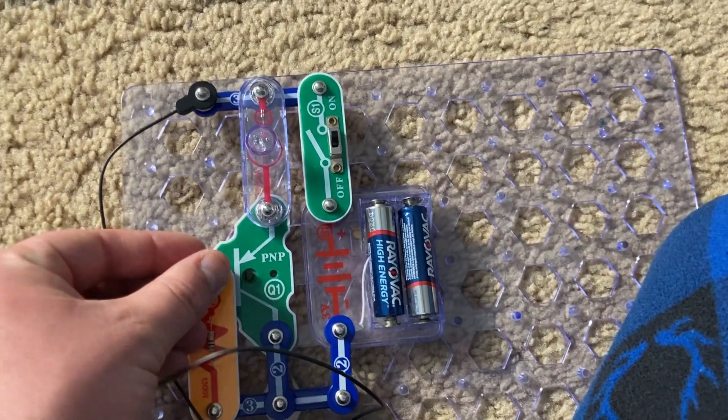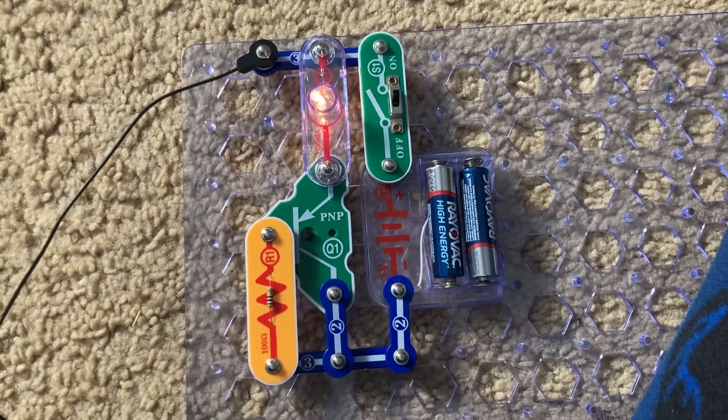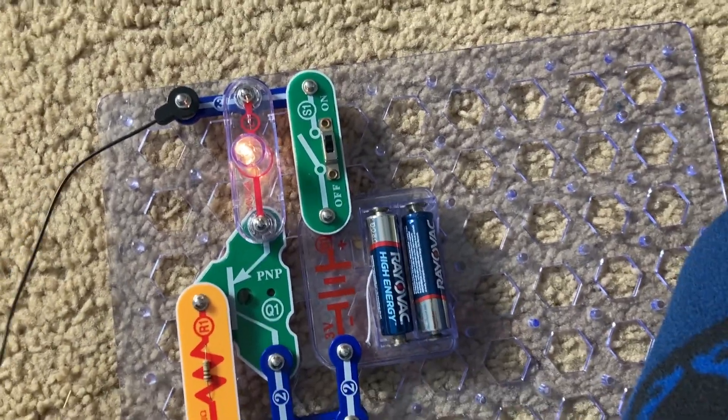Removing the jumper wire turns on the light, but it's now brighter since it's the lamp and not the LED.